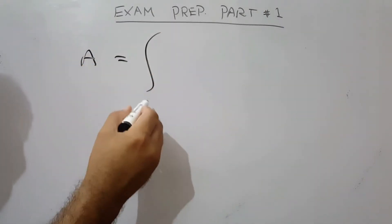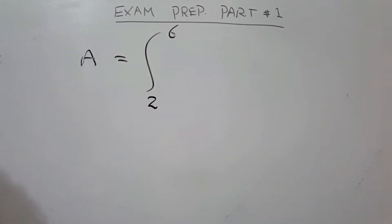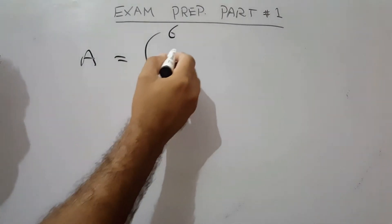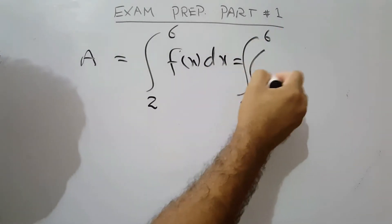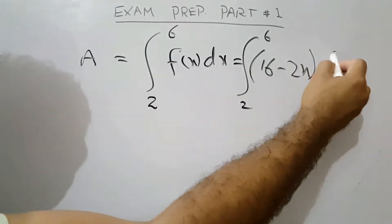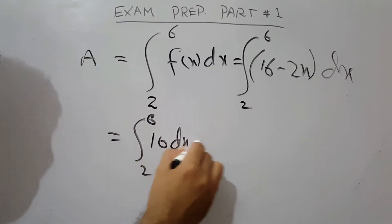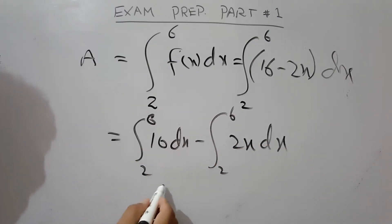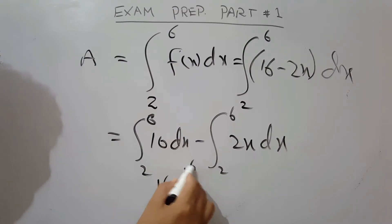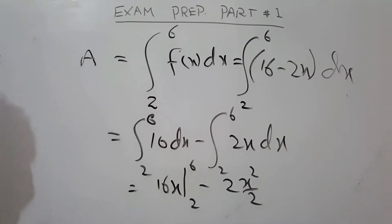Area equals the integral from the lower limit 2 to the upper limit 6 of f(x) dx. The function is 16 minus 2x dx. We integrate separately: integral of 16 dx and integral of 2x dx. The constant 16 integrates to 16x, and 2x integrates to x squared over 2, both evaluated from 2 to 6.